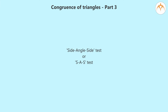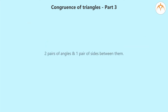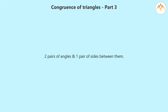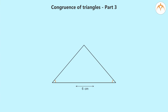Last time we developed tests of congruency by using three pairs of sides, or two pairs of sides and a pair of angles between them. Now we will take two pairs of angles and one pair of sides between them. So we are going to ask: if two pairs of angles and a pair of sides between them of two triangles are congruent, will these two triangles be congruent?